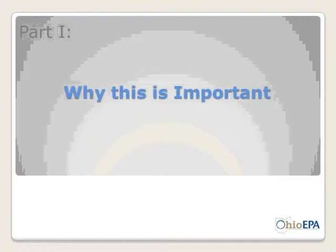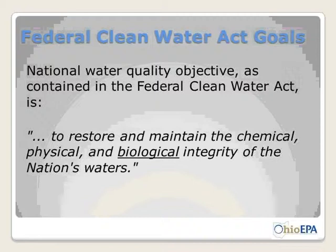Why is this important? The Federal Clean Water Act set forth several objectives. The biggest one that applies to Ohio when it comes to 401 and Isolated Wetland Permitting is the biological integrity of the nation's waters. Biology is important because it is an indicator of water quality, and we're required to restore and maintain that quality — bringing poor quality streams into compliance and maintaining high-quality waters in their current conditions.